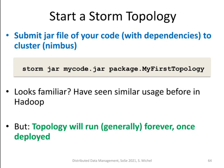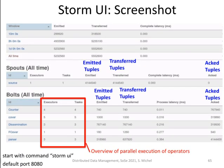Like in MapReduce, you package your code into a JAR file including dependencies and submit it to the Nimbus node using the command 'storm jar [jarfile] [main package]' defining the topology. The topology then runs continuously — in principle forever — because this is continuous query processing. Similar to Hadoop, you can also monitor how many tuples are processed by individual bolts using a UI, showing executors, tasks, tuples emitted, transferred, and acknowledged.